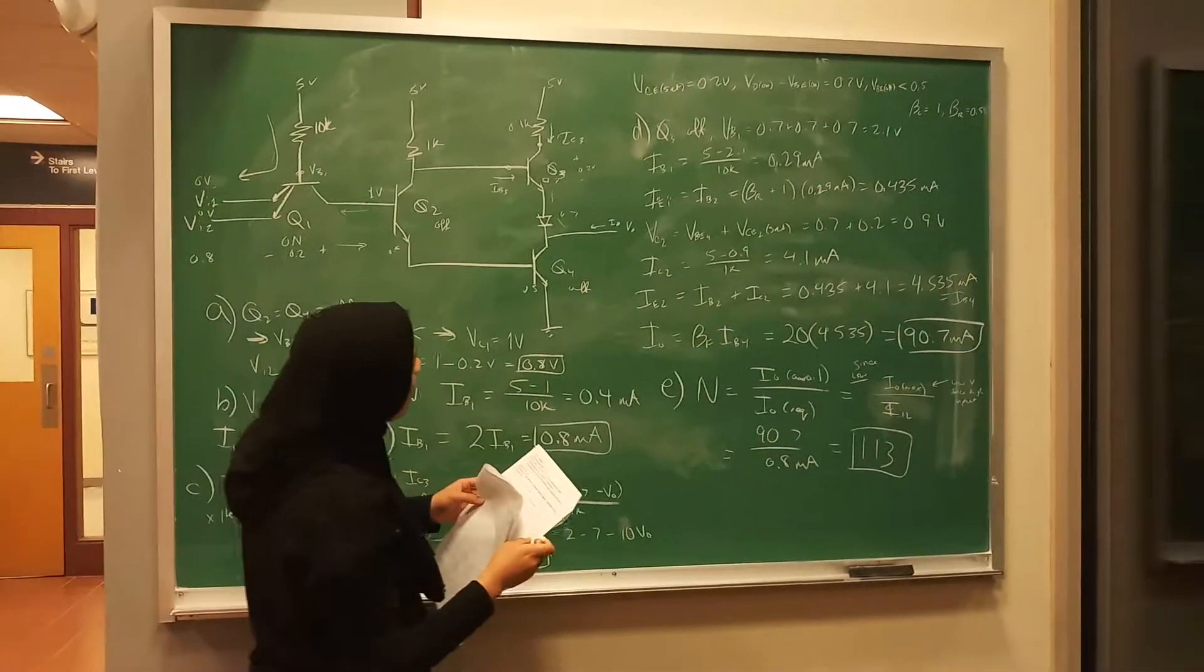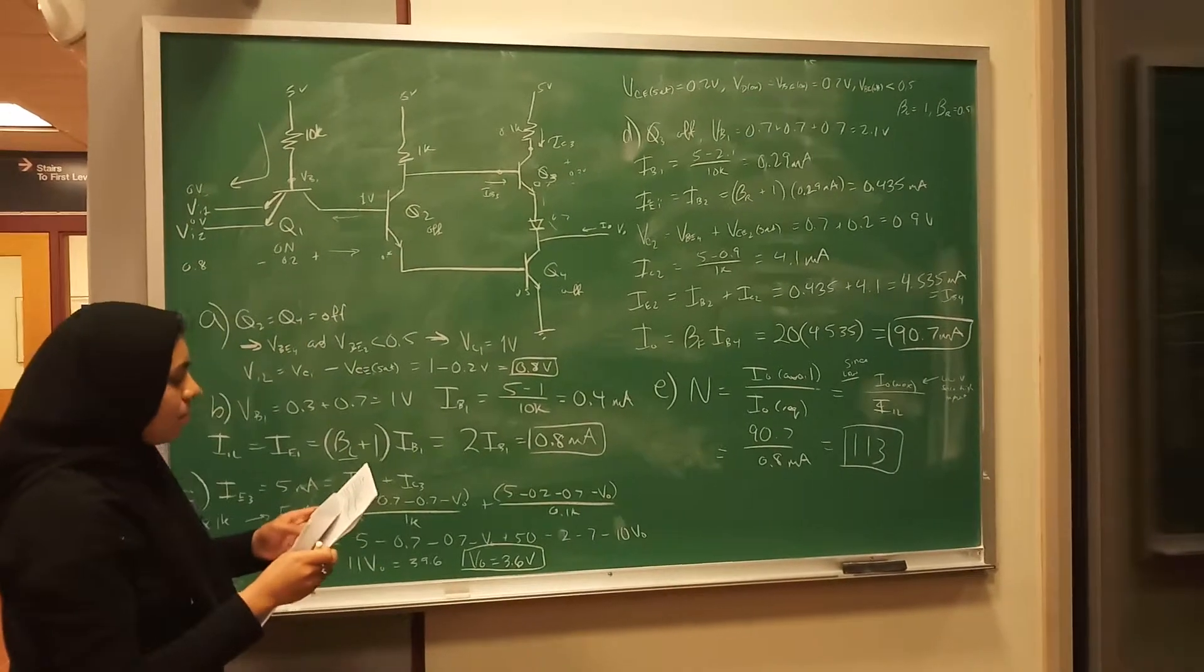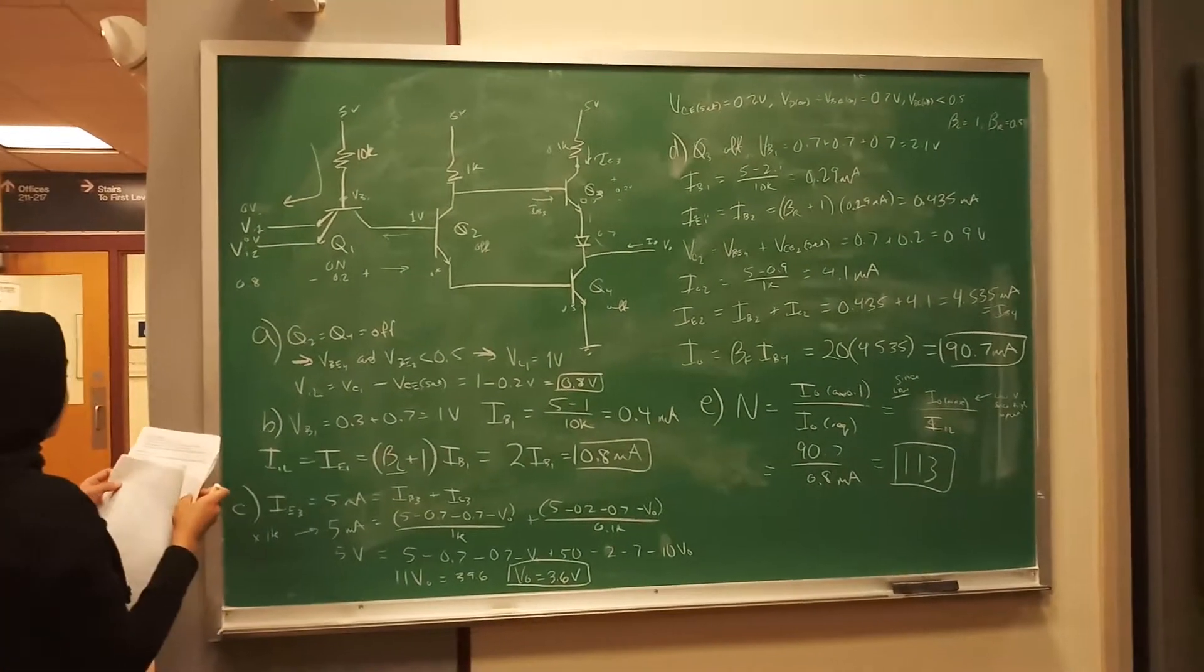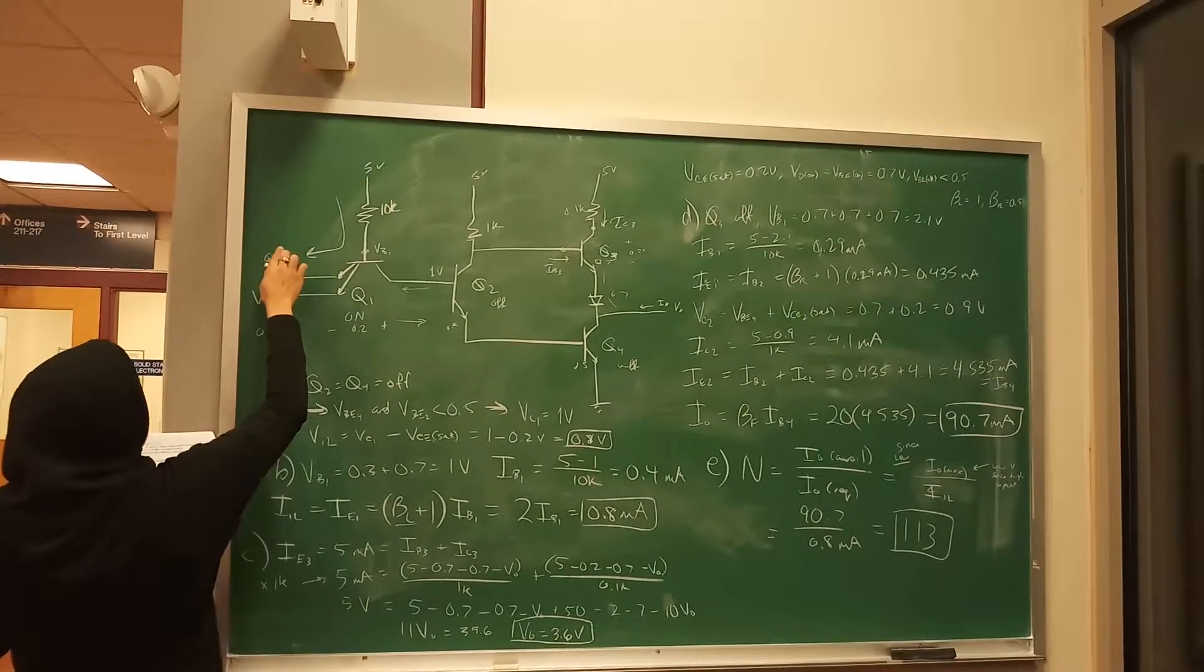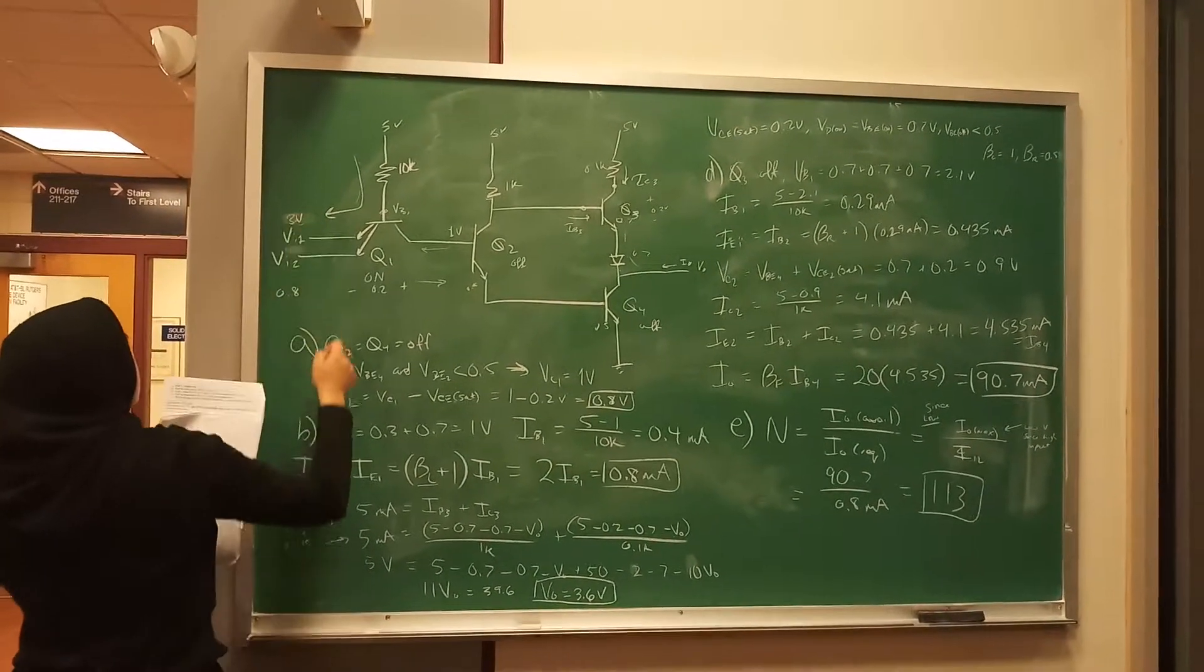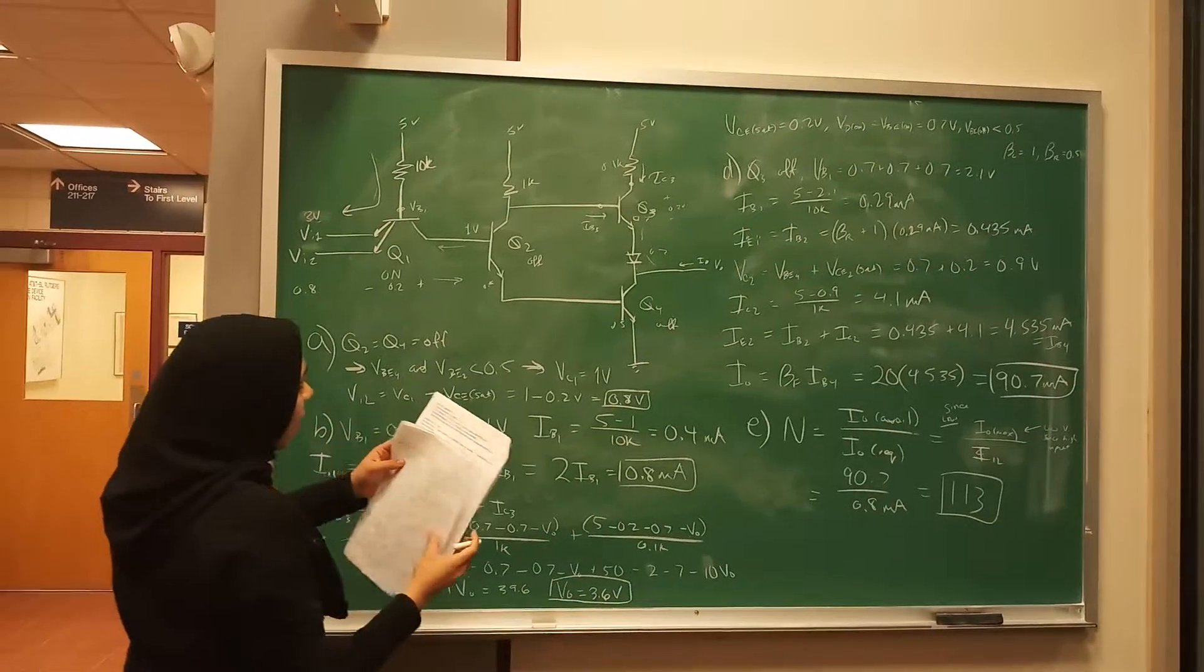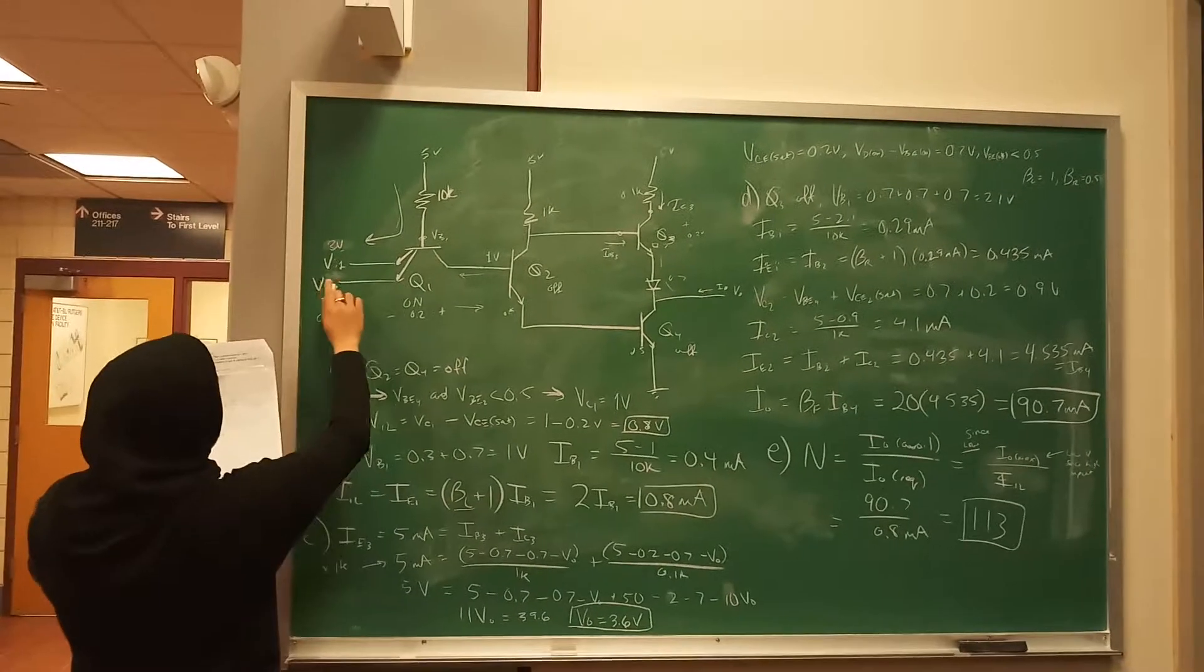Now, Part D is find maximum I_out when V_input_1 is 3 volts and V_input_2 is open circuit. So, this is 3 volts now. So if this is 3 volts, then you say that Q3 is off, because now...